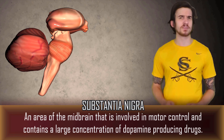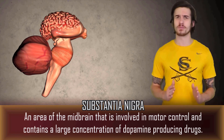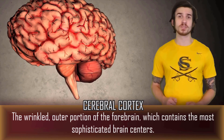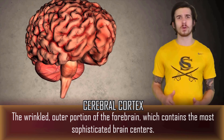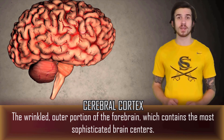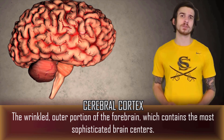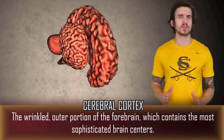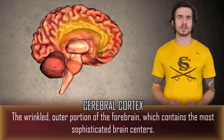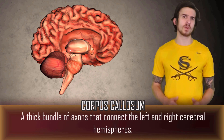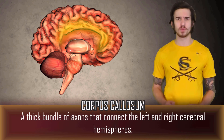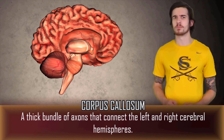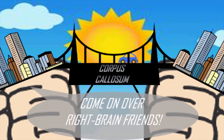Resting atop our brainstem is the largest area of the brain known as the forebrain. The wrinkly outer portion of the forebrain containing some of our most sophisticated brain centers is called the cerebral cortex. The cerebral cortex is divided into two nearly symmetrical left and right halves. These halves are connected by a thick bundle of axons known as the corpus callosum, which allows the right and left brain hemispheres to communicate with one another — like a bridge that allows citizens from the left brain to visit citizens of the right brain.